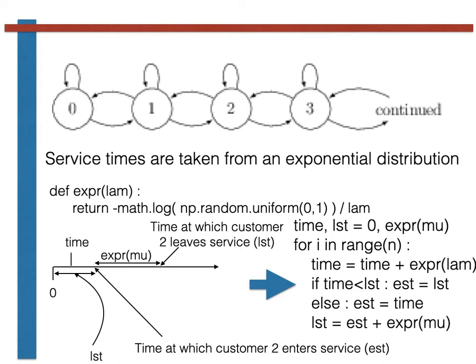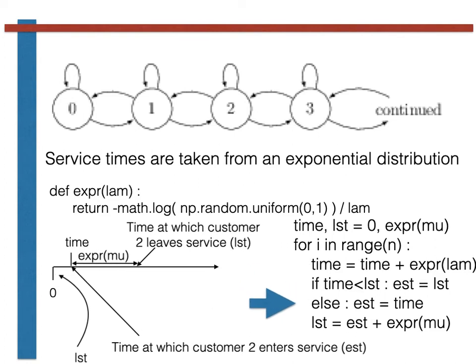Let's finish our survey of this code by considering why this else is here. The else accounts for the situation when customer 2 arrives after customer 1 has finished being served. As shown in the diagram, customer 2, in this case, can enter service directly without having to wait. The enter service time in this second case is thus equal to his arrival time.